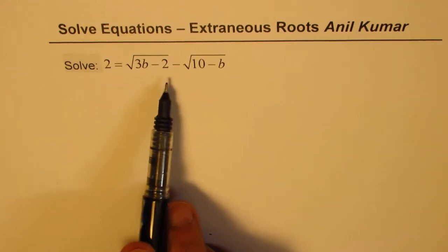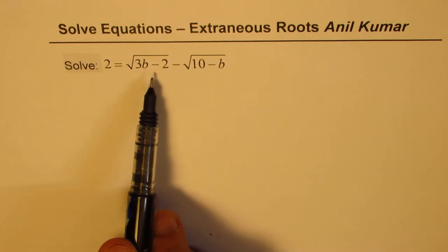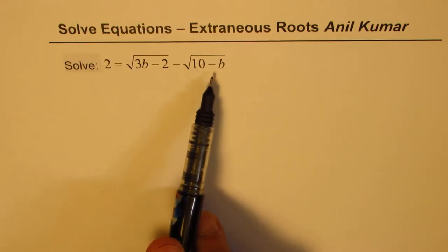We need to solve this radical equation: 2 equals square root of 3b minus 2 minus square root of 10 minus b.